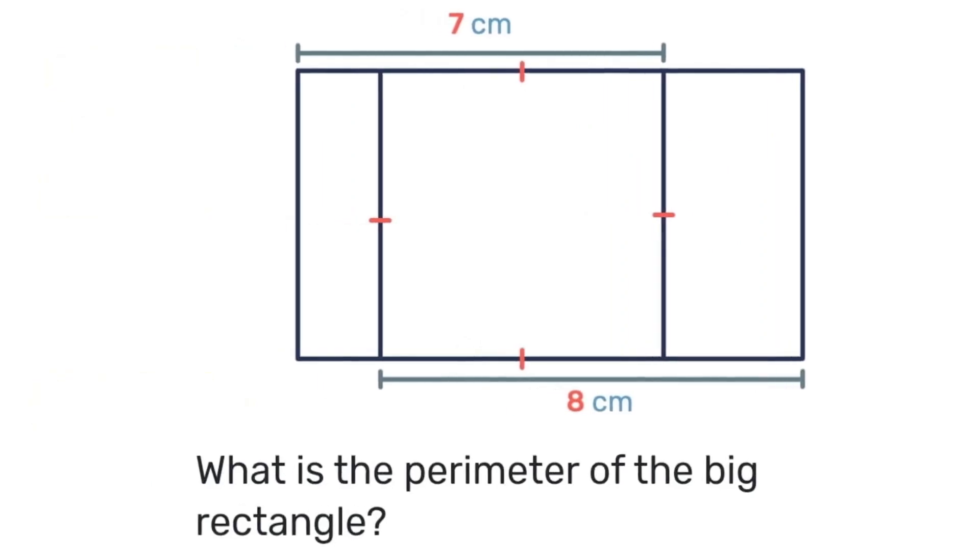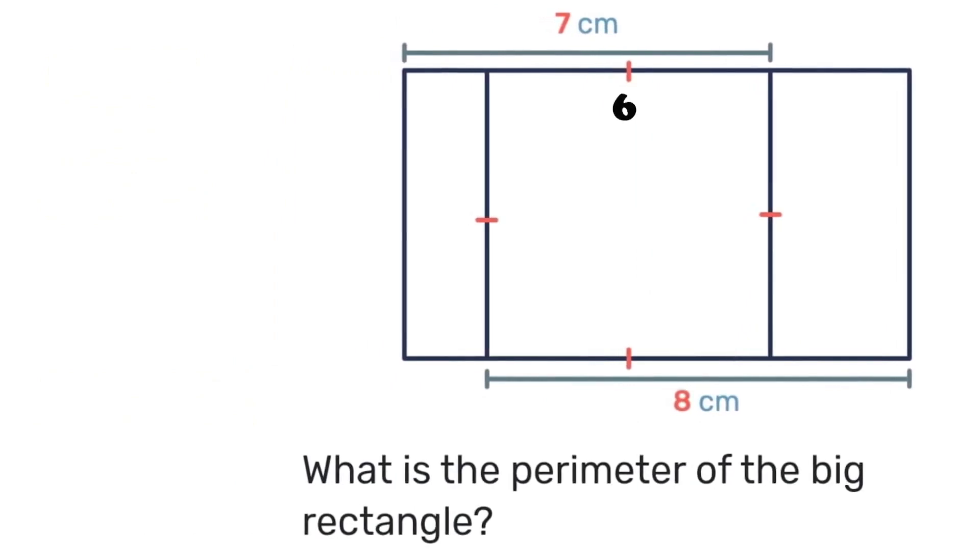So let's begin by guessing that that square has a side of 6. If that is 6 then the width is also 6 as we see here. Next that upper left hand corner will be 1 because 7 take away 6 is 1 and down below will also be 1.